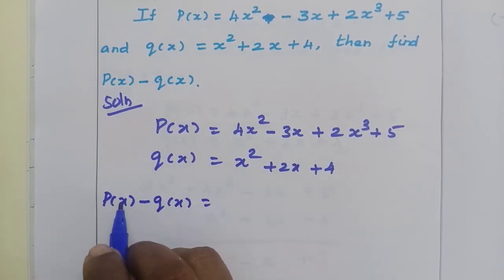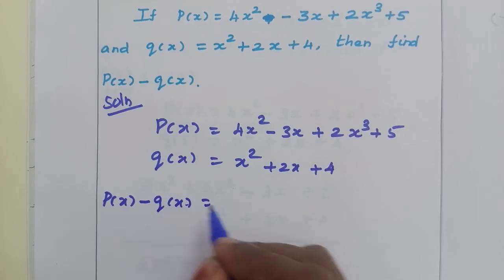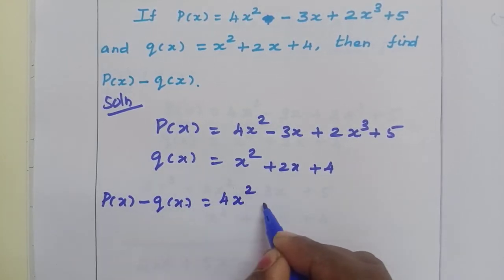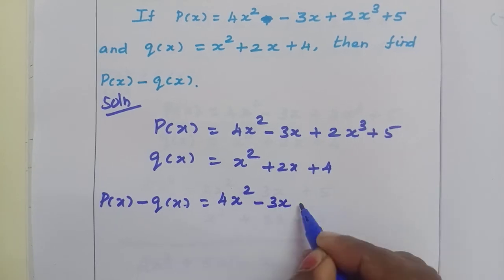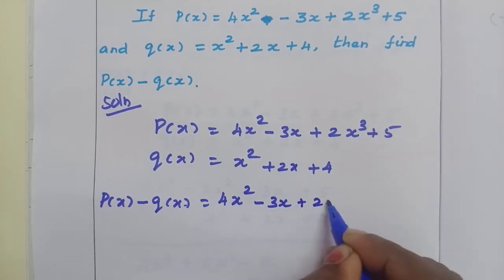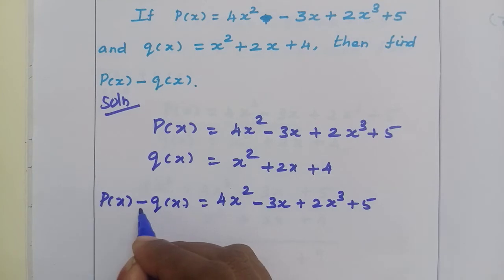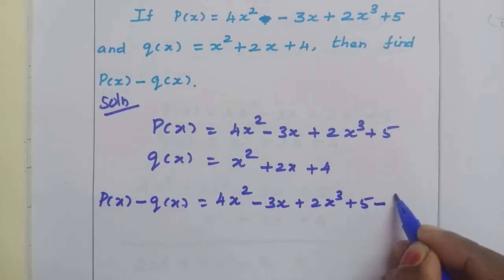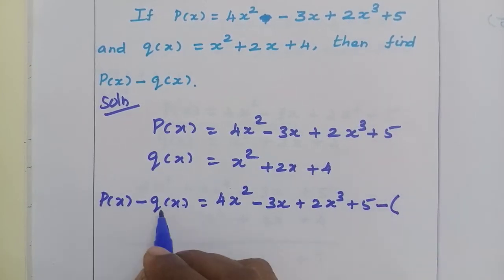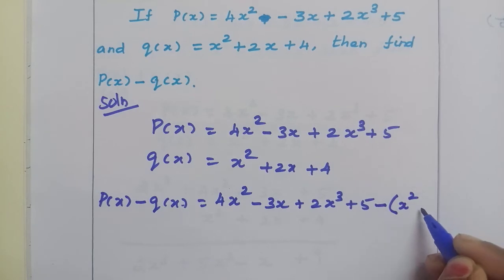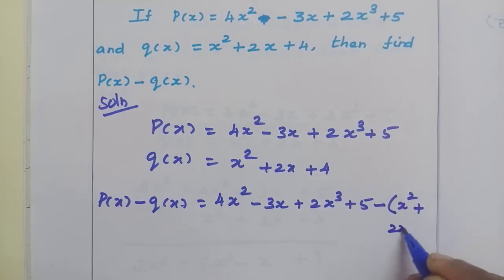In those respective places, write the polynomial. So, first I am writing p of x: 4x squared minus 3x plus 2x cubed plus 5, then there is a minus symbol — put the minus symbol — then write q of x: x squared plus 2x plus 4.